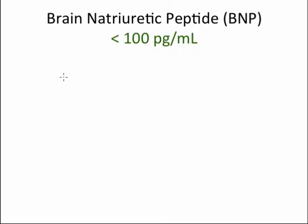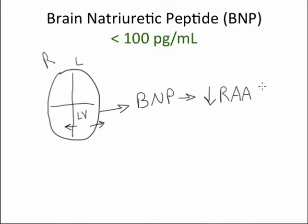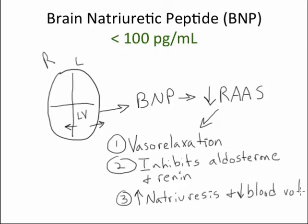The last cardiac lab is the brain natriuretic peptide, or BNP. When the left ventricle is stretched from within, BNP is released. BNP opposes the function of the renin-angiotensin-aldosterone system, resulting in vessel relaxation, inhibition of aldosterone and renin, an increase in natriuresis — meaning sodium diuresis — and a decrease in blood volume. Water always follows sodium, so the primary function of BNP is to dump sodium and water. You will find an elevated BNP in congestive heart failure, myocardial infarction, and hypertension.